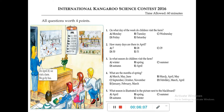Question 5: What season is illustrated in the picture next to the blackboard? 'Illustrated' means what you can see. The options are spring, summer, autumn, and winter. Looking at the picture next to the blackboard, it shows winter. So E is correct.